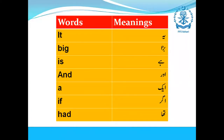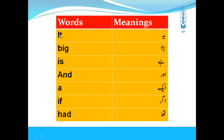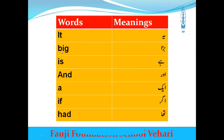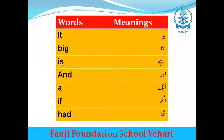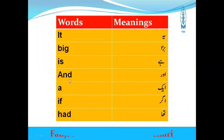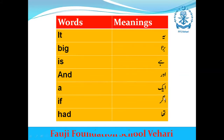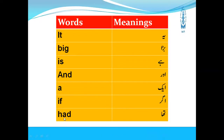So dear students, first of all we know the difficult words. The first word is: 'it' — it is big. Big. Is — is. And. Or. A. Egg. If. Had — H, A, D — had.